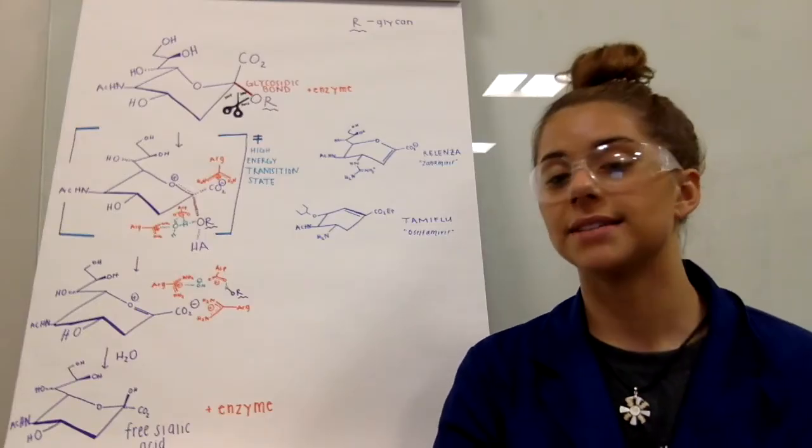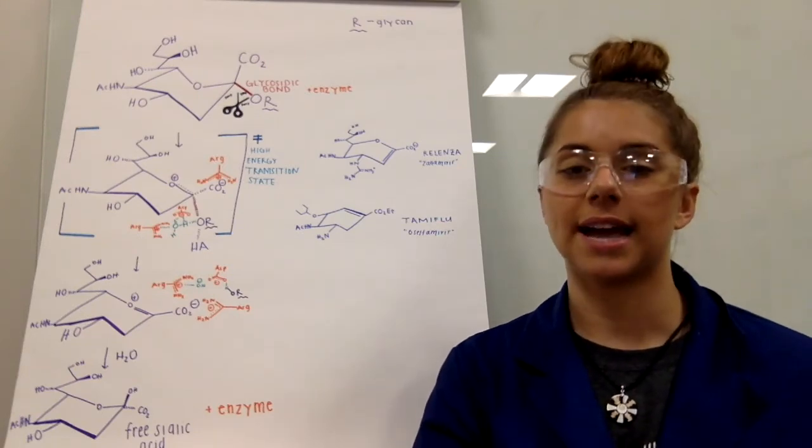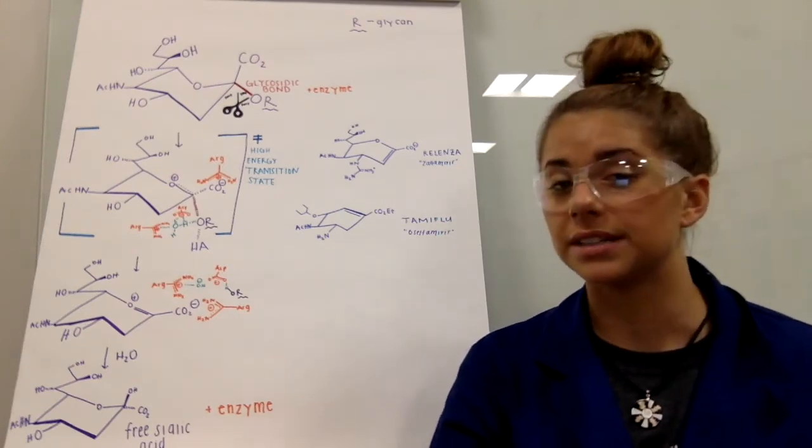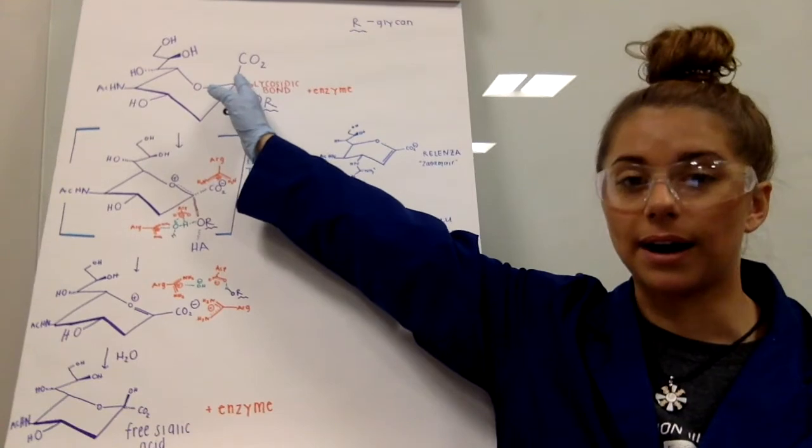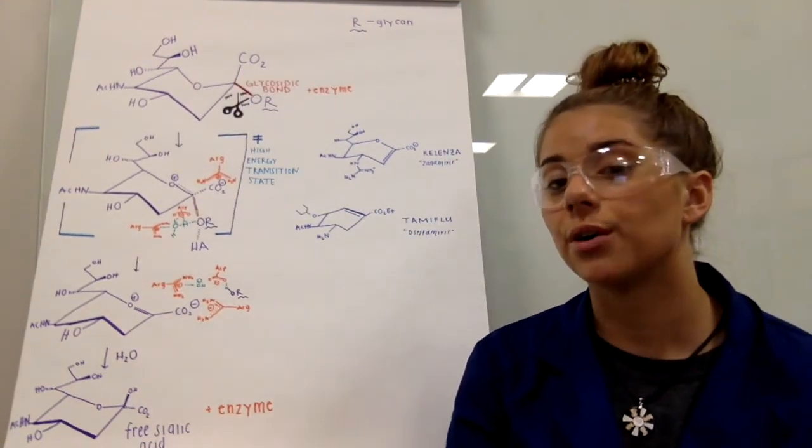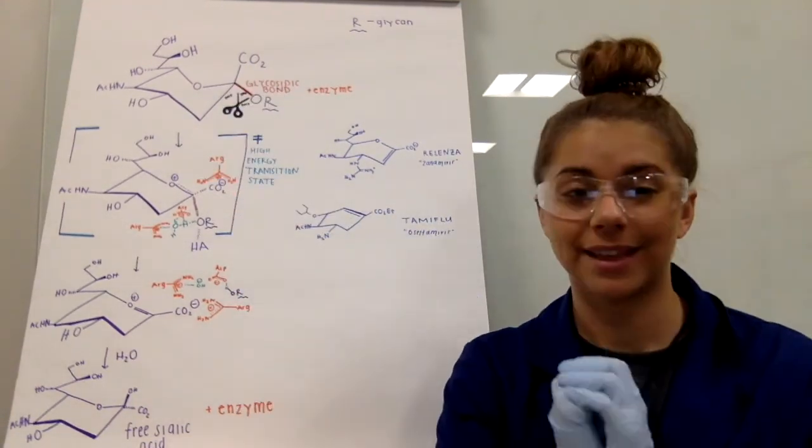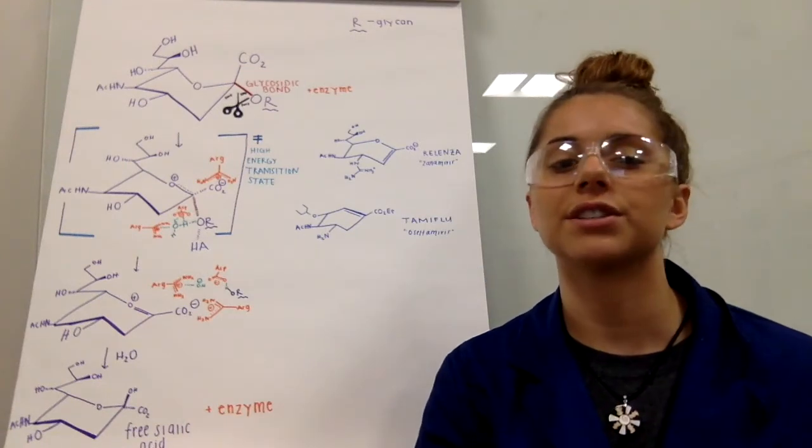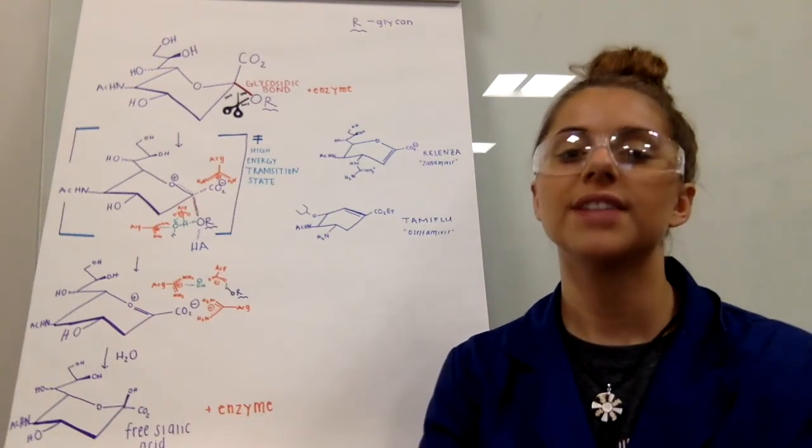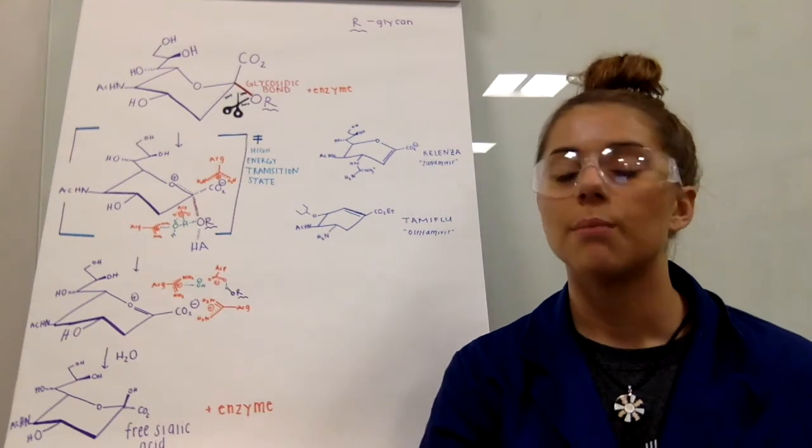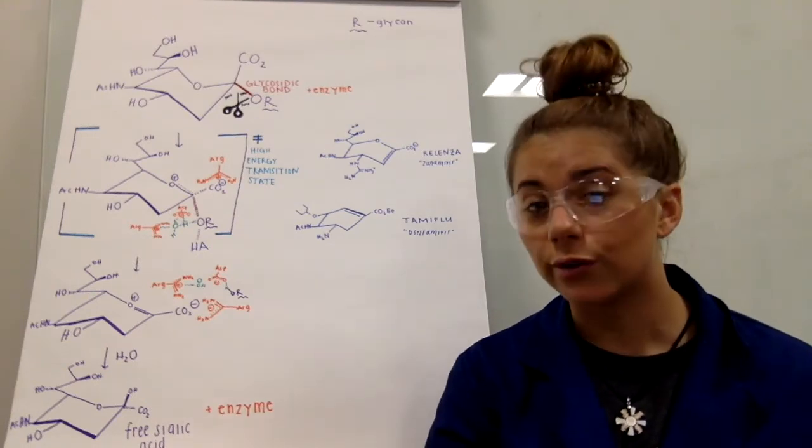The neuraminidase enzyme cleaves the sialic acid groups from the glycoproteins via the glycosidic bond releasing the viral cells, as shown in the mechanism here. This allows for the virus to spread from the host cell to uninfected surrounding cells, beginning the vicious cycle all over again.